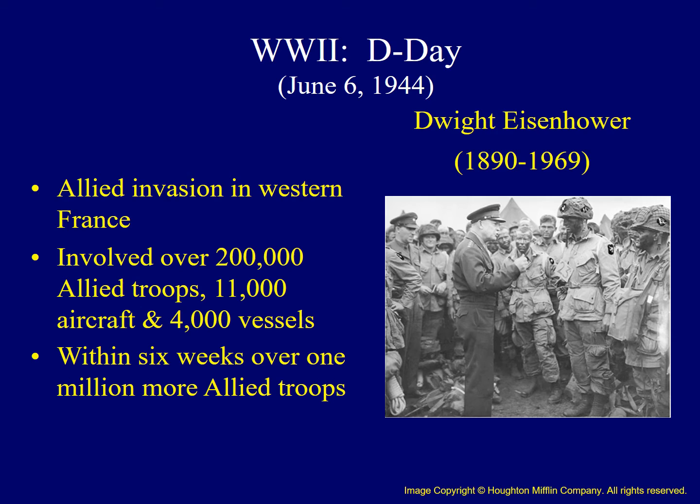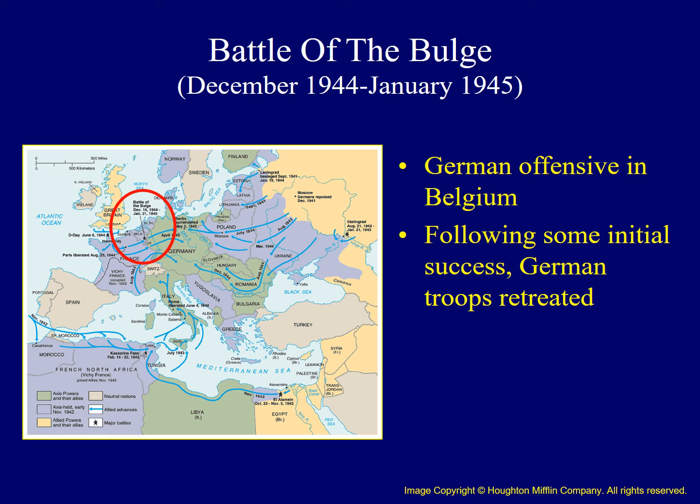Once the beaches in Normandy had been secured, reinforcements followed. One late German offensive began in December of 1944 — the so-called Battle of the Bulge. Hitler's reserve units launched an assault on Allied forces in an attempt to disrupt the flow of supplies to the Allies through Belgium. Following several weeks of heavy fighting, German troops were forced to retreat as an end to the fighting in Europe seemed to be drawing near.